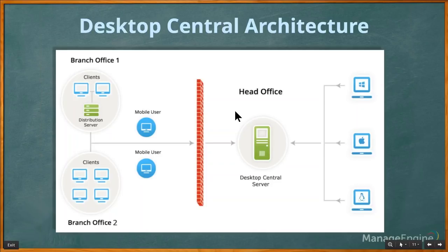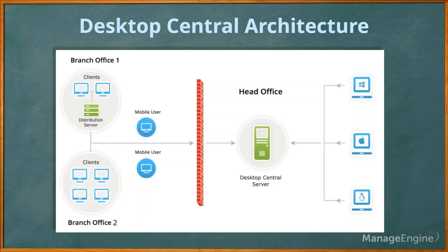Let's move on to the Desktop Central architecture. Desktop Central is an on-premise solution where the server can be installed in your local network or DMZ. The console can be accessed anywhere using the hostname or IP address followed by the port details. DMZ is where you can place your server in a secured hosting so that client machines can reach the server in a secure way.